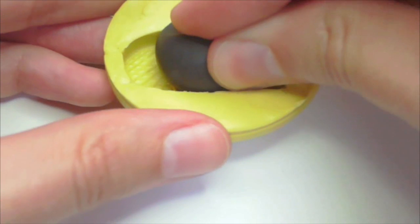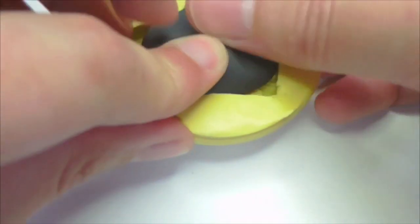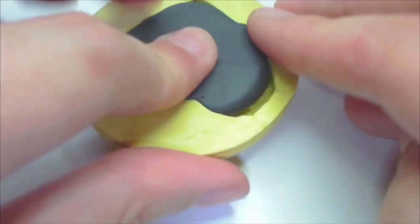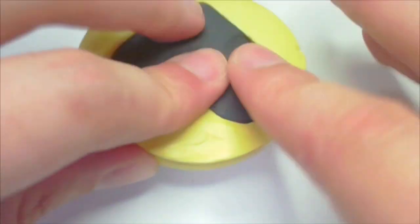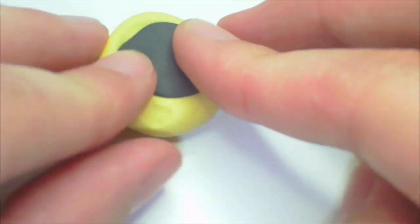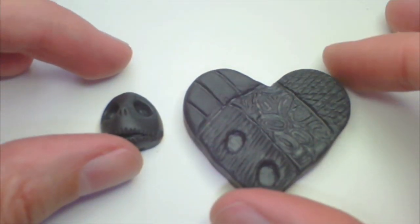Condition some black clay, then press it into the heart mold. Do the same thing with the other mold. Then remove them both.